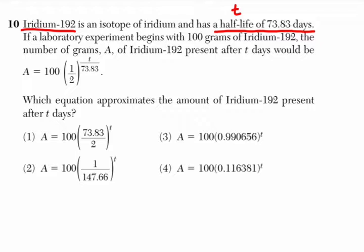So if I had 100 grams of the substance after 73.83 days, you would have 50. That's the amount of time it takes for that to happen. And this laboratory experiment begins with 100 grams of the Iridium-192. Okay, so that's 100 grams in the beginning, which is why I have this number here.